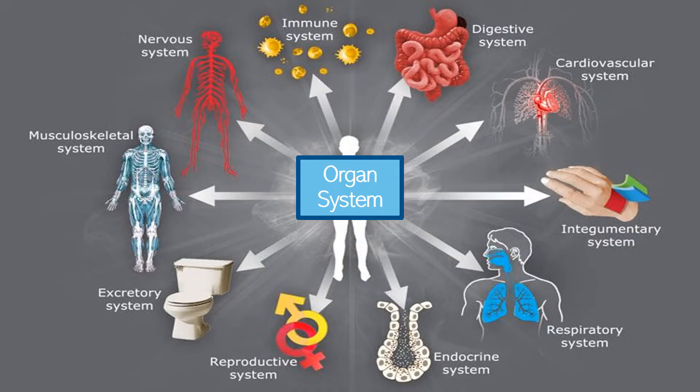There are 11 organ systems which make up an organism: the nervous system, immune system, digestive system, cardiovascular system, integumentary system, respiratory, endocrine, reproductive system, excretory, and musculoskeletal system. We are going to discuss each one of them.